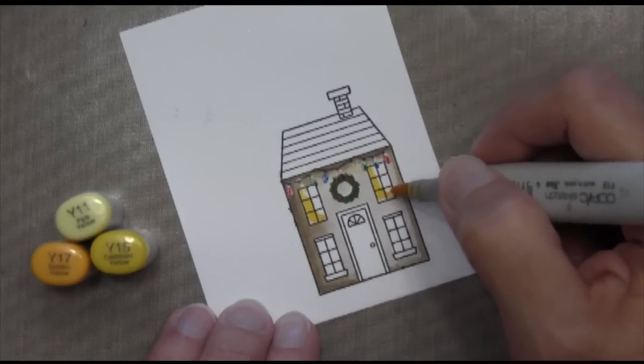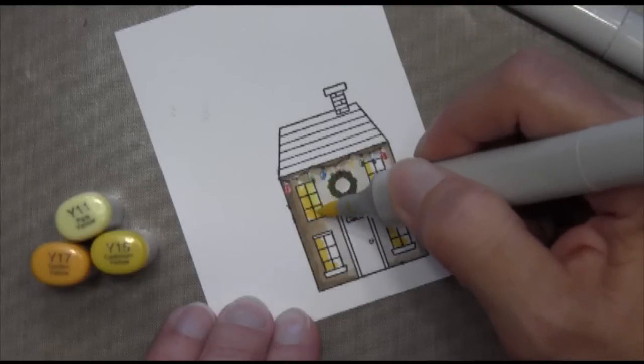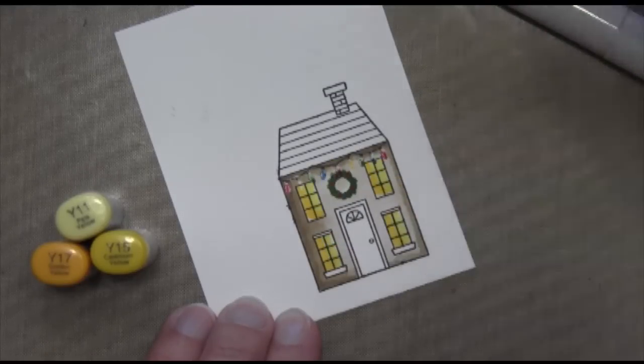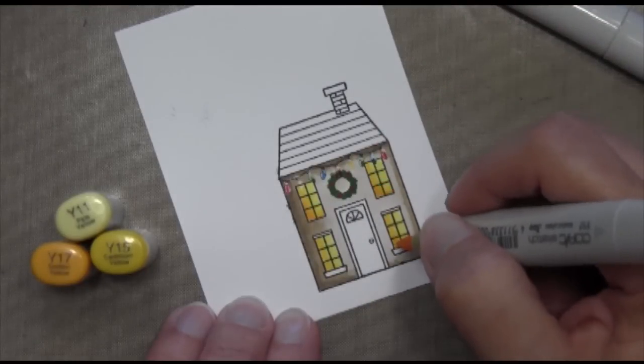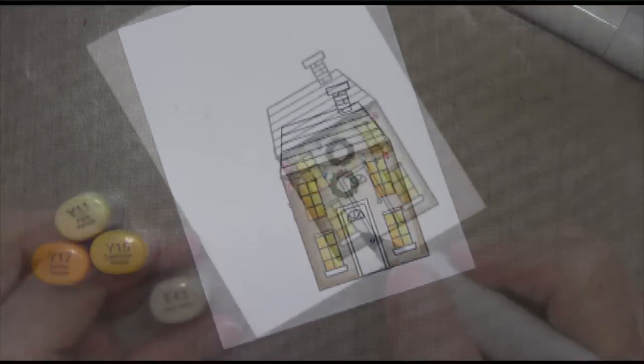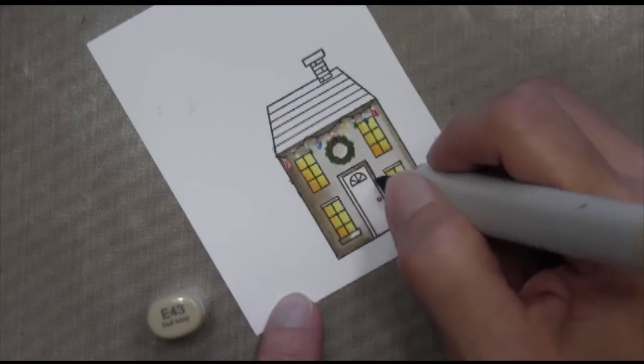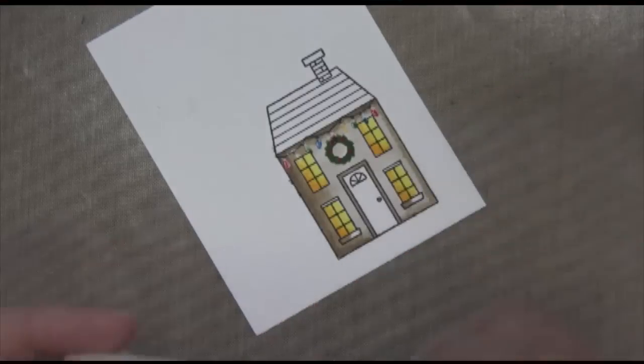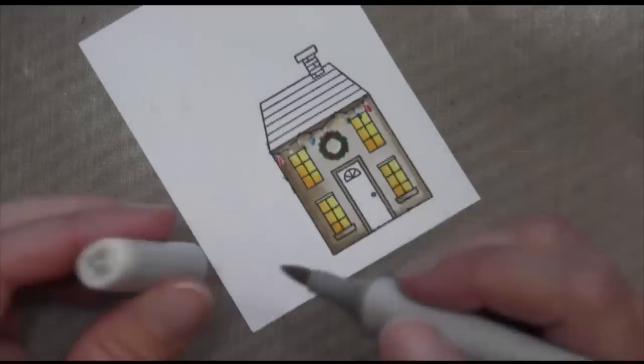I forgot to do the hole right there in the wreath. Now for the windows, I'm going to do Y15 first on the left and the bottom. Then I'll fill the right-hand side with Y11, which is my lighter color. Finally, I'll take my Y17 and I'll just do a little bit in the lower left-hand corner.